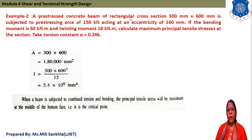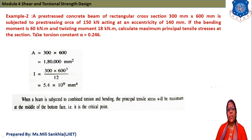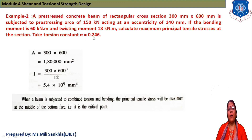Example 2: A prestressed concrete beam of rectangular cross-section 300 mm × 600 mm is subjected to a prestressing force of 150 kN acting at an eccentricity of 140 mm. The bending moment is 16 kN·m and the twisting moment is 18 kN·m. Calculate the maximum principal tensile stress at the section. Take torsion constant α = 0.246.